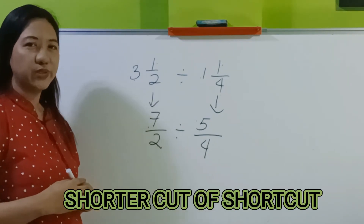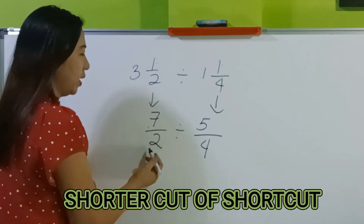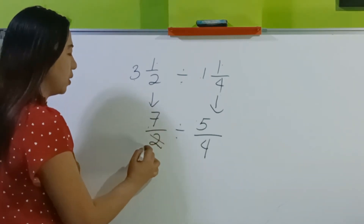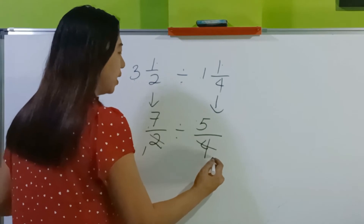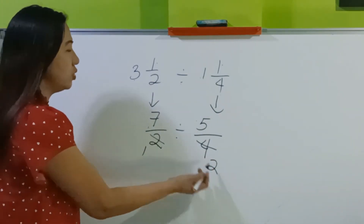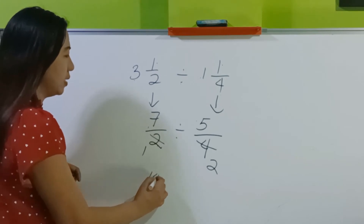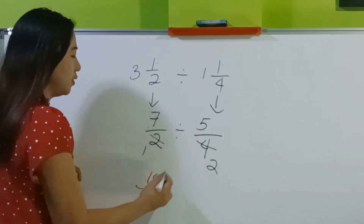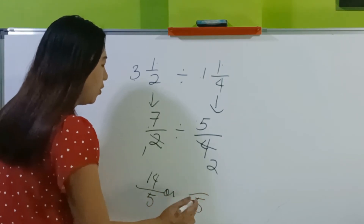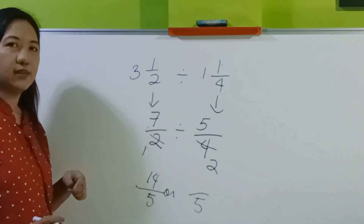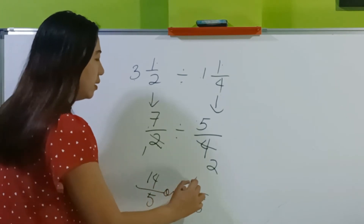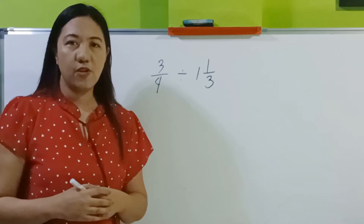In the shorter cut of shortcut, what can you divide by? 2 — so 2 divided by 2 is 1, 4 divided by 2 is 2. Now let's cross multiply: 2 times 7 is 14, 1 times 5 is 5. How many 5s are there in 14? We have 2, and remainder 4 — so 2 and 4 fifths.